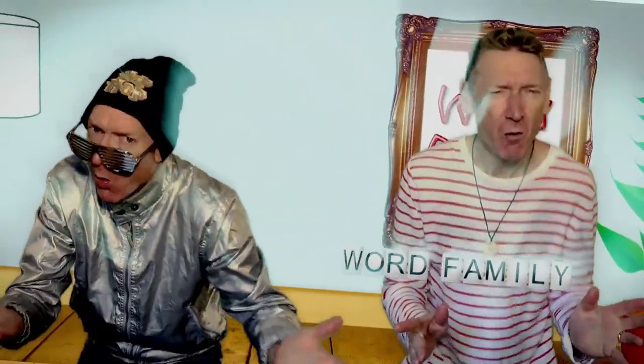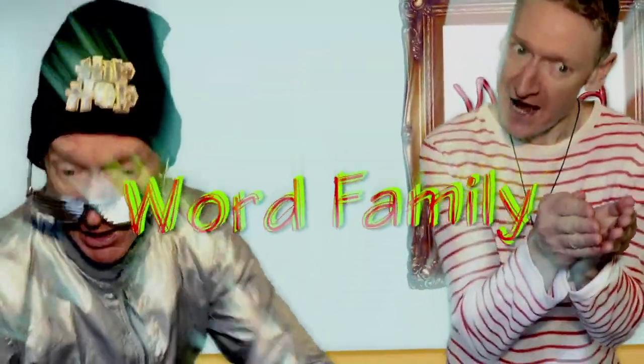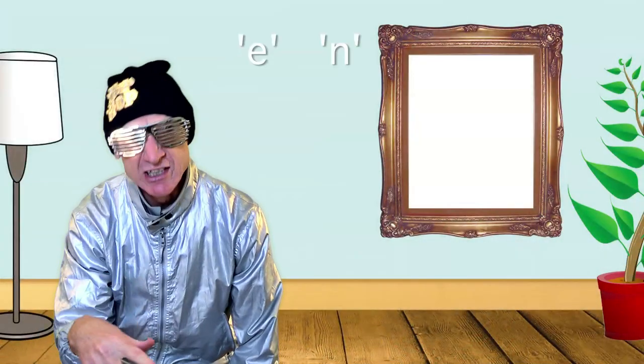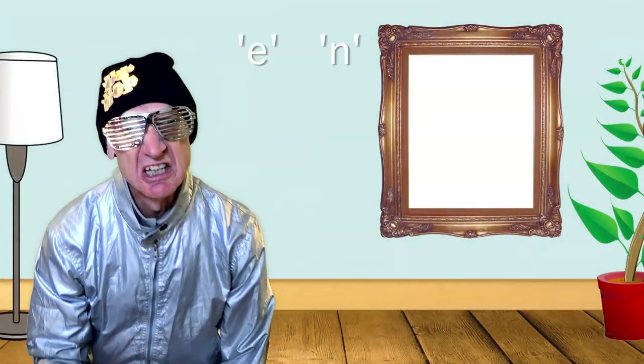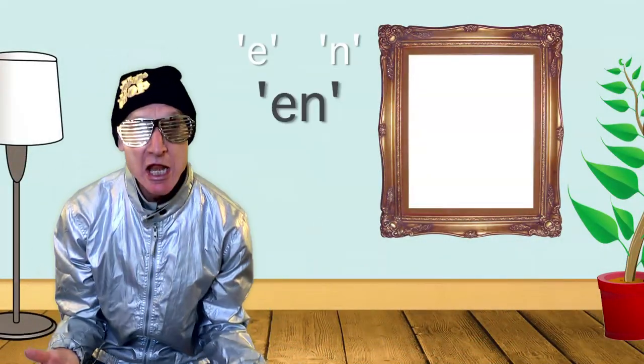You and me are the word family. When we learn these sounds, they can help us to read. You got A and N — En.